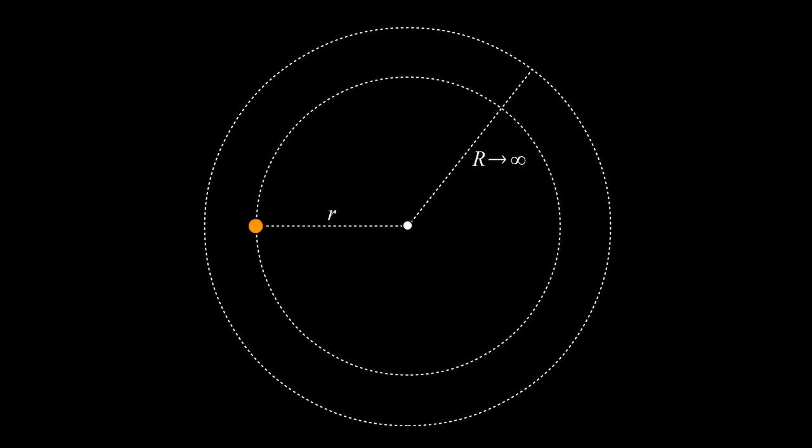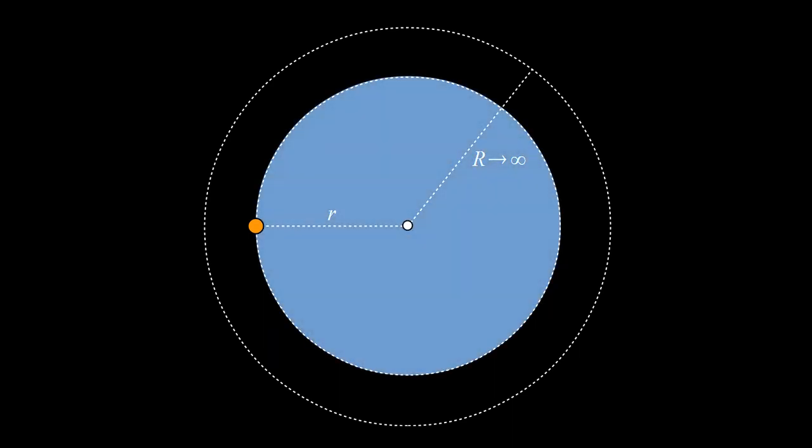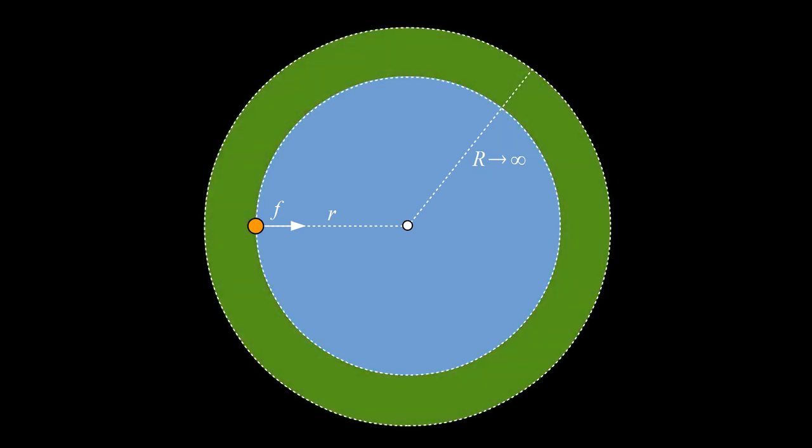Now, we choose any particle in the universe. We will color it orange and assume small r is its distance from the center. Let's color blue the region inside the sphere of radius small r. The matter in the blue region will exert a gravitational force on our particle directed toward the center. Let's color the rest of the universe green. We can think of this as a spherical shell of inner radius small r and outer radius big R, with big R going to infinity.